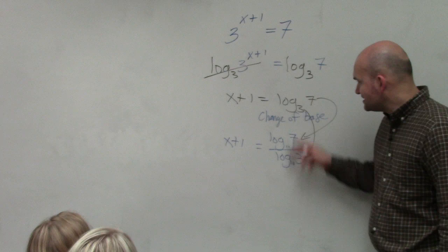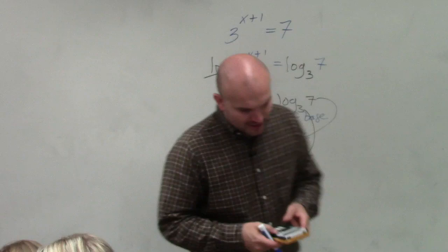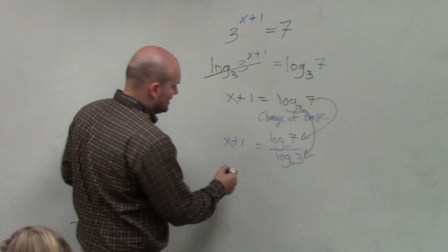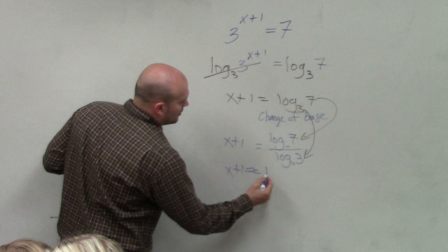Oh, because it's... So then in your calculator, you can now do log of seven divided by log of three. And what I get is x plus one is approximately 1.77.